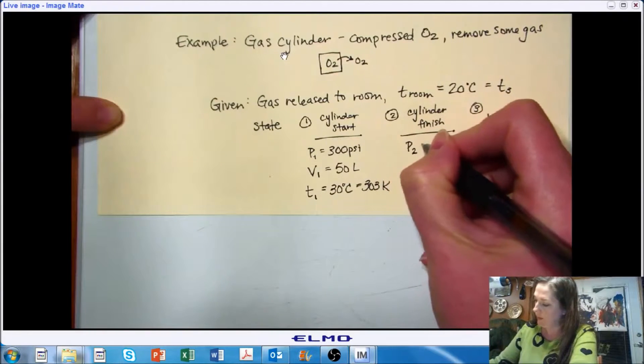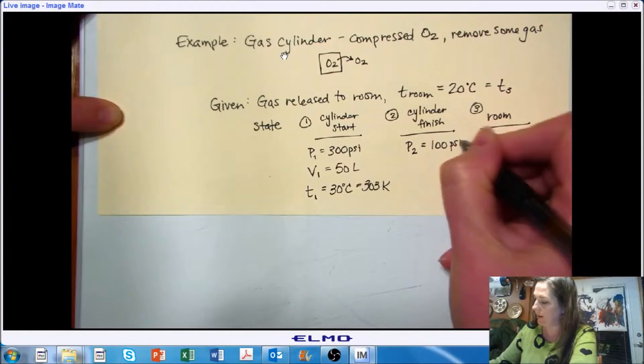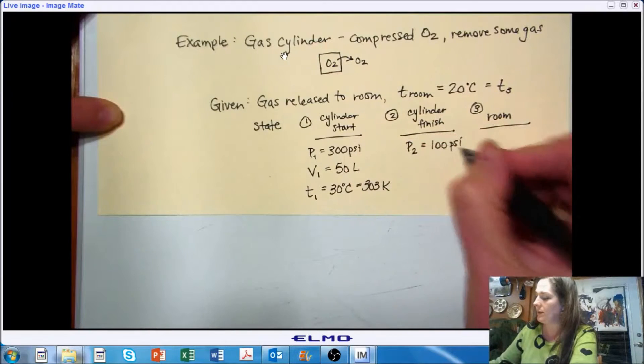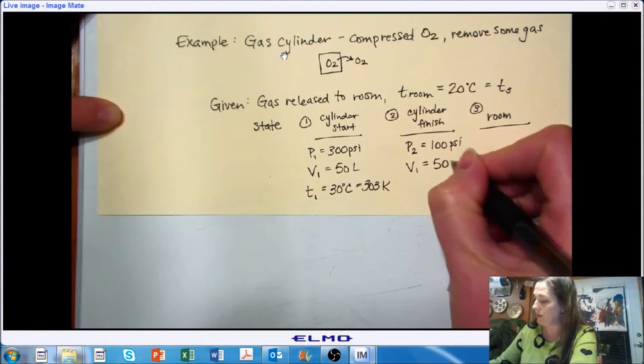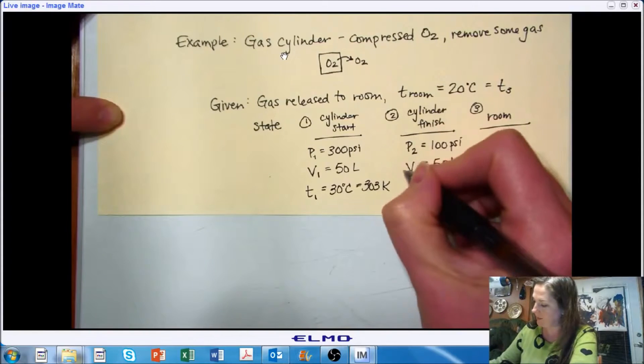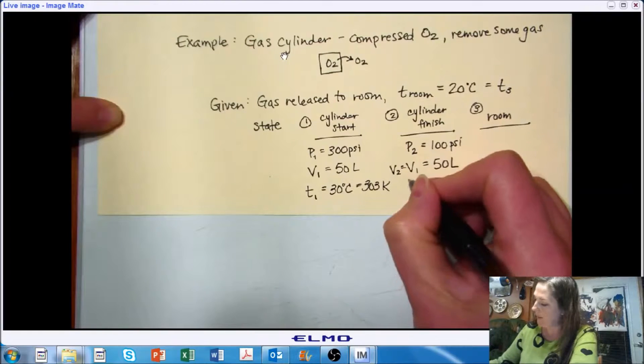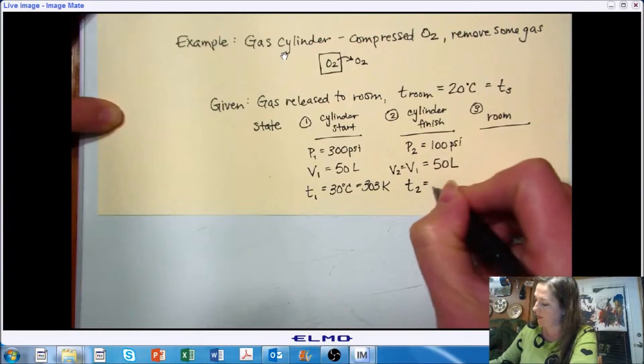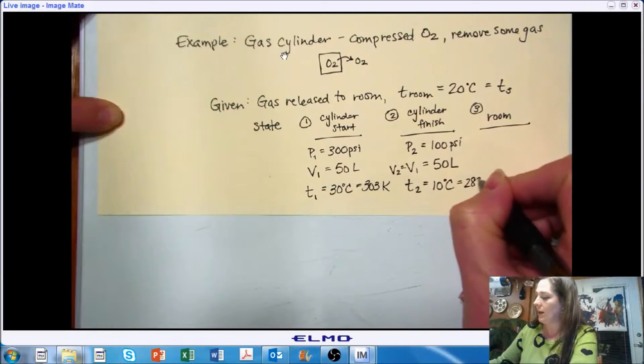Now after we release some unknown quantity of gas, we now know that our pressure is 100 psi. So we allowed the pressure to change from 300 psi to 100 psi. The volume of our cylinder has not changed, so we're still at 50 liters. And our final temperature of our cylinder is 10 degrees C, or 283 kelvin.